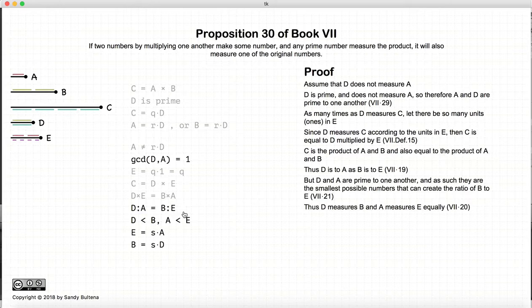And subsequent to this information, we know that A measures E and D measures B. Again, this is because D and A are the two smallest numbers that can represent this ratio, and that comes from Proposition 20 of this book.